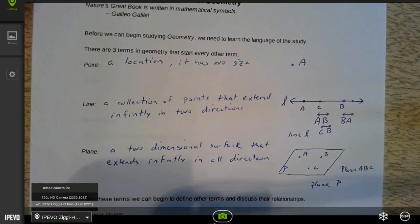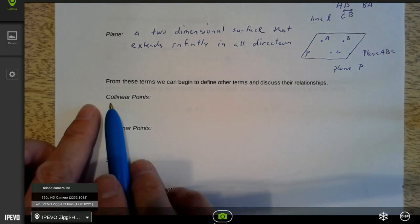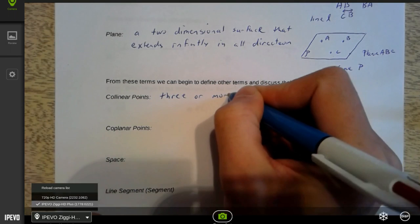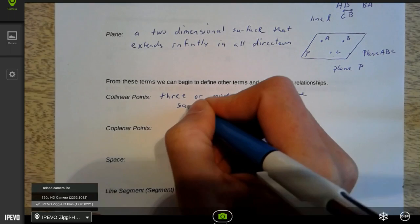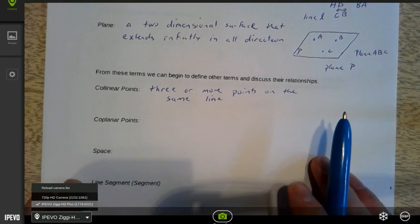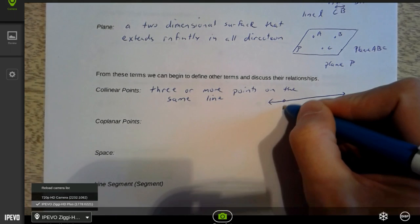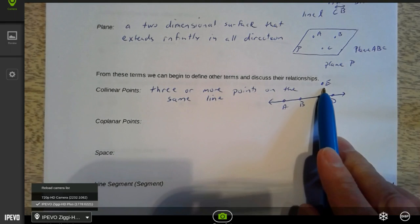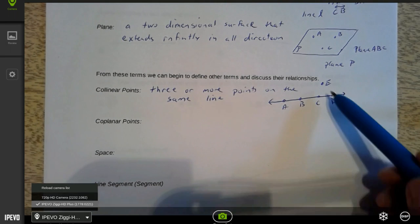So when we talk about collinear, collinear points are together, co, kind of like co-pilots, linear. So they're together on a line. Collinear points are three or more points on the same line. Has to be three or more because if you have two points, they're going to be on the same line no matter what. So if I drew my line and put some points on here: A, B, C, D. All of these points are all collinear. If I put a point over here, that point is not collinear. So these four are all collinear, but they're not collinear with E.